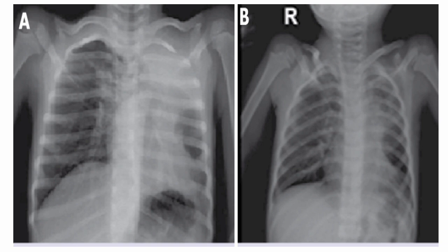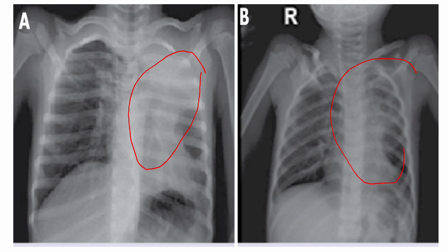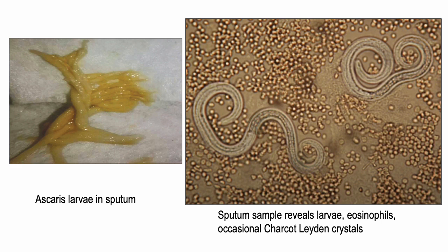An X-ray of a patient with Ascaris pneumonia shows pneumonic infiltration at the upper lobe of the left lung; figure B shows the appearance after the patient coughed up the worm. Patients with pulmonary Ascaris may occasionally cough up worms in their sputum. Microscopy of sputum reveals multiple eosinophils, larval forms of Ascaris, and Charcot-Leyden crystals may also be present.